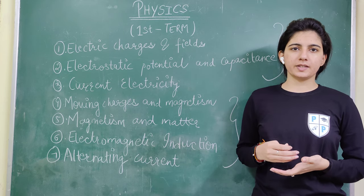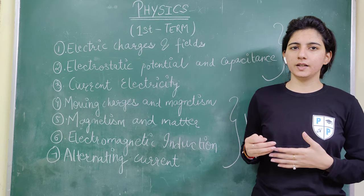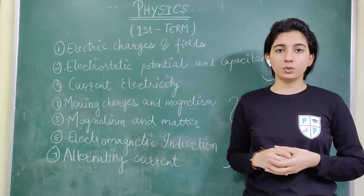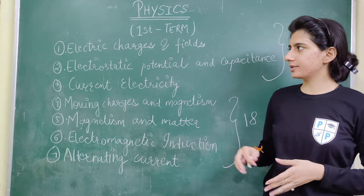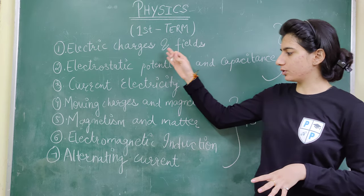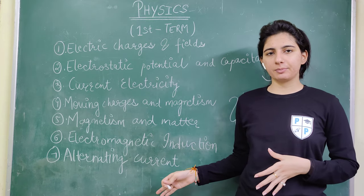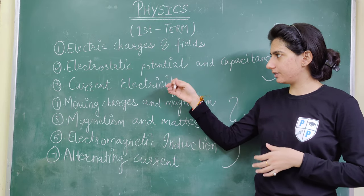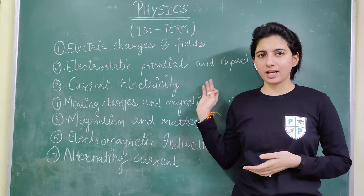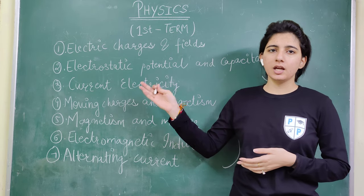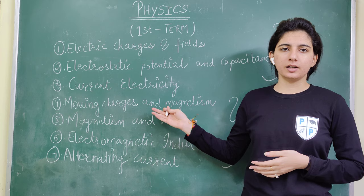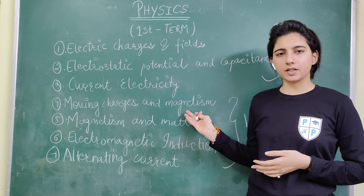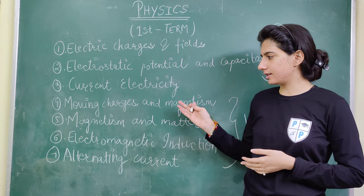CBSE class 12 physics latest syllabus for the upcoming 12th board exams. You have a total of 7 chapters. The first one is electric charges and field, the second one is electrostatic potential and capacitance, the third one is current electricity, and the fourth one is moving charges and magnetism.